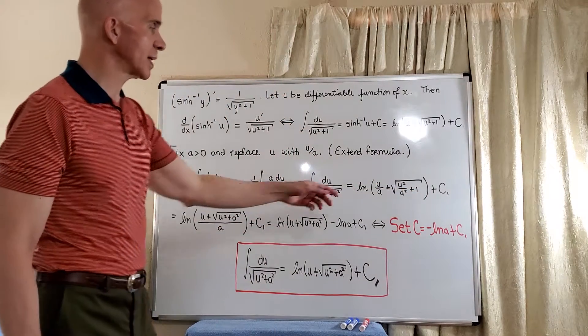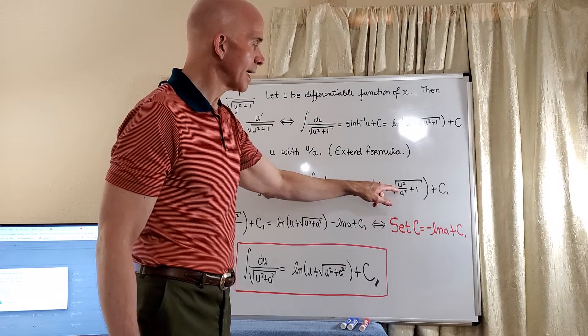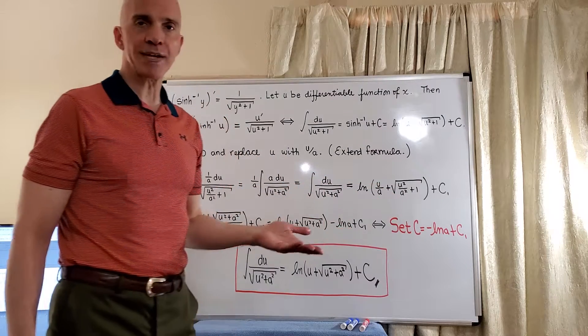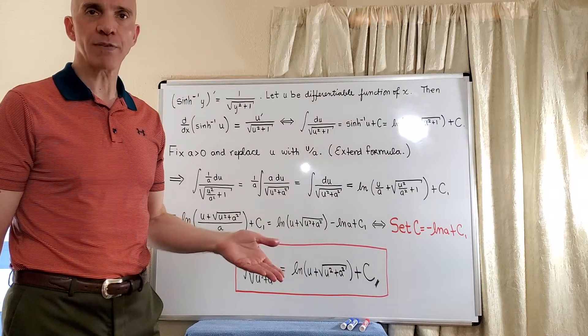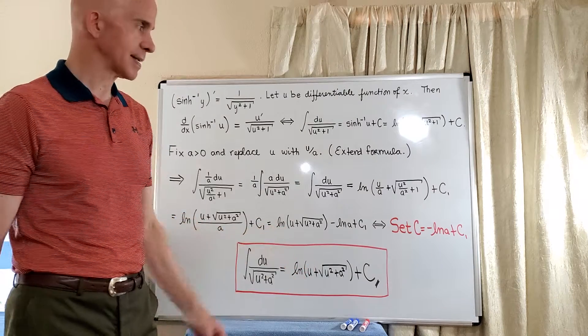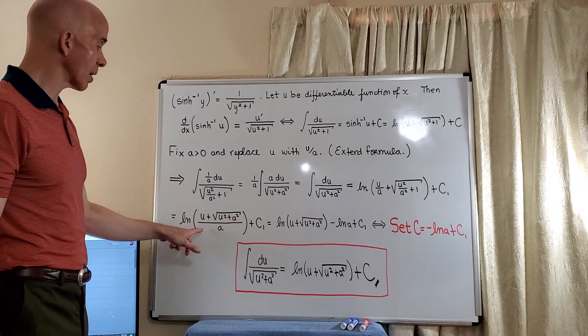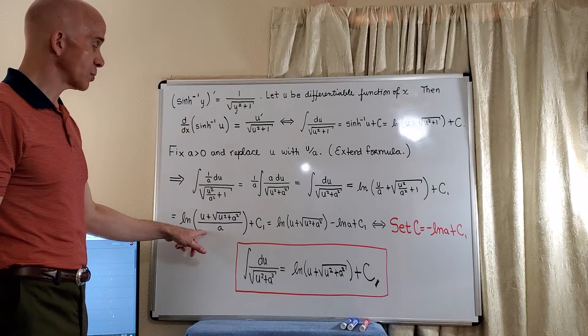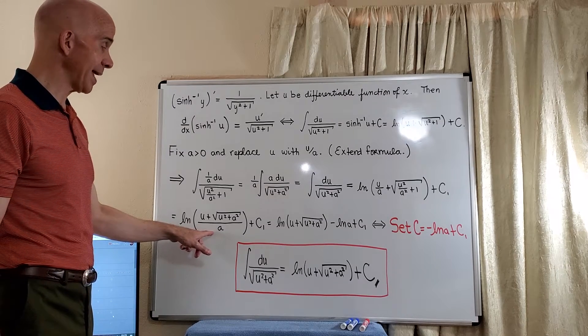And now of course when you get a common denominator here, again remember we've got the square root of a squared, which is the absolute value of a. But that's just plain old a since a is positive. So now we get the natural log of u plus the square root of u squared plus a squared divided by a.